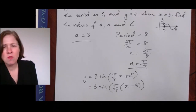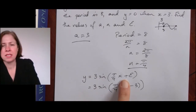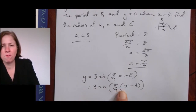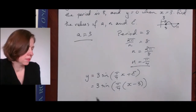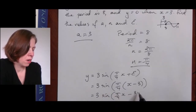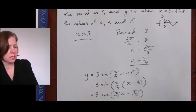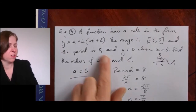I then want to convert this into the same form — with plus epsilon — where I don't have (x minus three) in a separate bracket. That just means I need to expand the bracket, so I get three sine of (pi on four times x minus three pi on four).